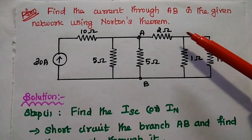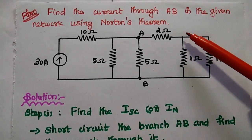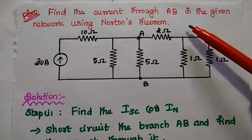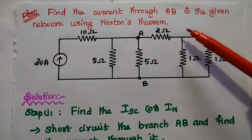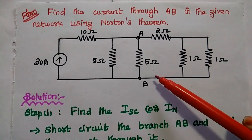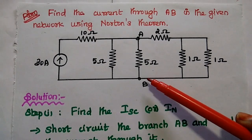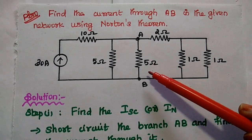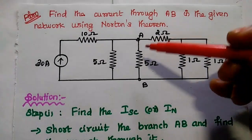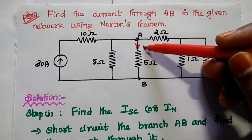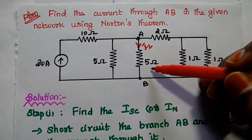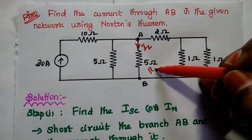Dear students, now we are going to solve one important problem in Norton's theorem. Find the current through the branch AB in the given network using Norton's theorem. So this is the given circuit. We are going to find out the current flowing through this 5 ohm resistor, which we can consider as the load resistor.